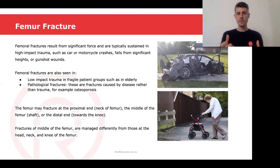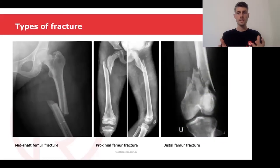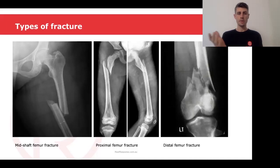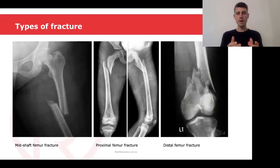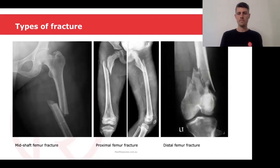Fractures of the middle of the femur are managed differently from those that are at the head, neck or knee of the femur. Here we can see a few different fractures. We've got a mid-shaft femur fracture which is the first one — the bone is broken right in the middle and the two ends are coming together. A proximal femur fracture is the second X-ray along, where the fracture has occurred up towards near the hip. A distal femur fracture is the final picture, further down towards the knee.